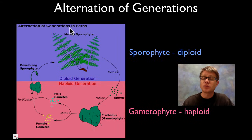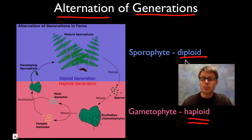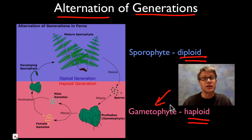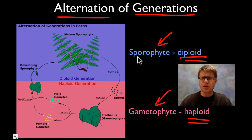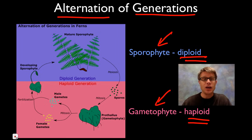Alternation of generation is a term you should understand when talking about plants. Basically, it means there are two life cycles: the haploid life cycle, where you have one set of all the chromosomes, and the diploid. Botanists have given specific names to these — the haploid portion is called the gametophyte, and the diploid portion is called the sporophyte. In humans, the diploid is all the cells in our body, and the haploid portion is only the gametes or sex cells. But in plants, the gametophyte is often an actual multicellular part of the plant.